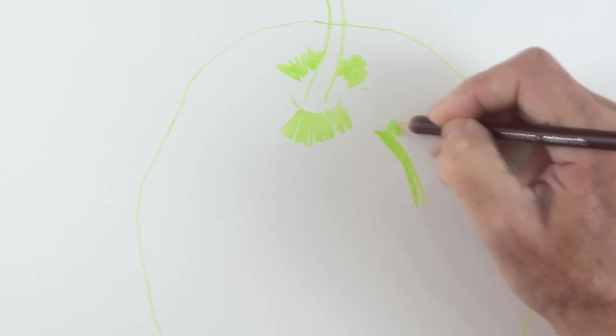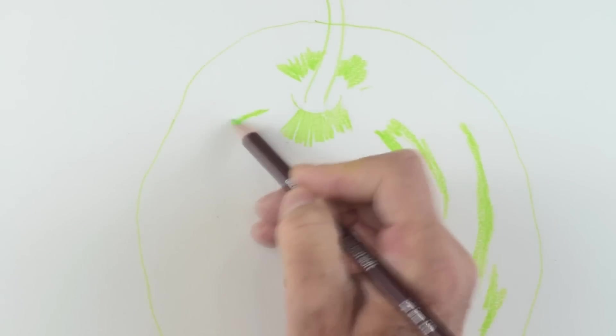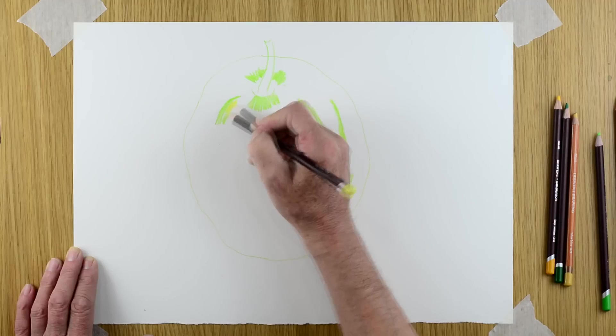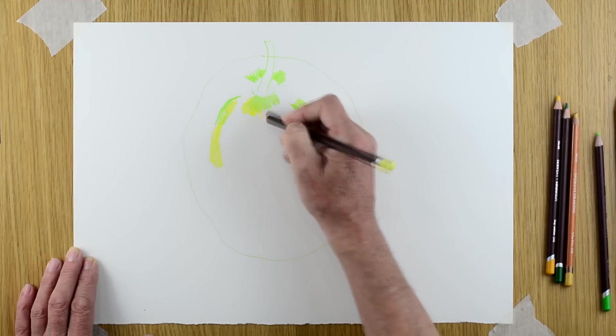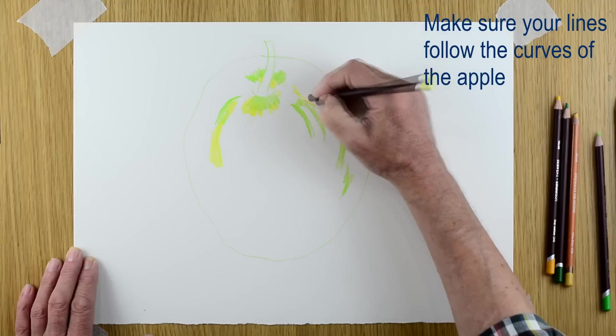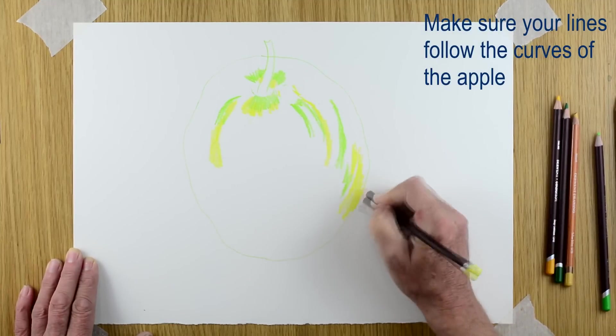So what I'm doing, I'm starting with the greens. You'll notice I'm putting in all the light colors first and I'm trying to follow the form of the apple. In other words, I'm trying to draw around the shape of the apple. You can see the lines that I'm drawing are coming down the side in a nice curved way.